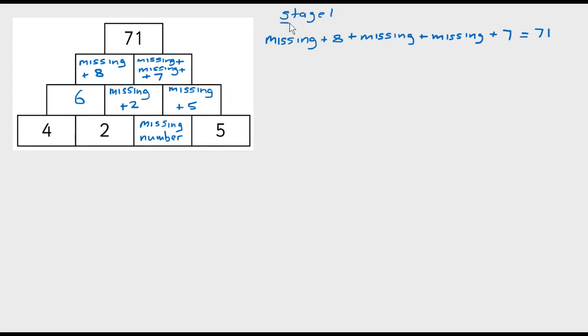It's building up this equation here, this rule that's going to work. We can tidy that up a bit, because I've got missing number plus missing number plus missing number, well that's 3 lots of my missing number. And I've got 8 plus 7, well that makes 15.